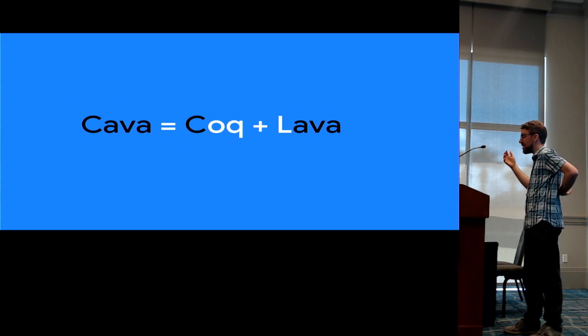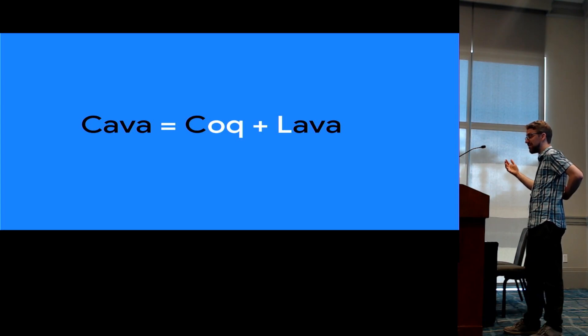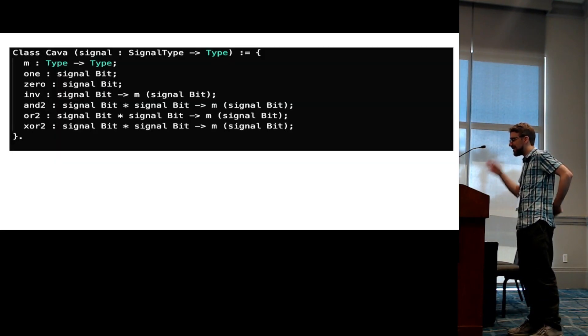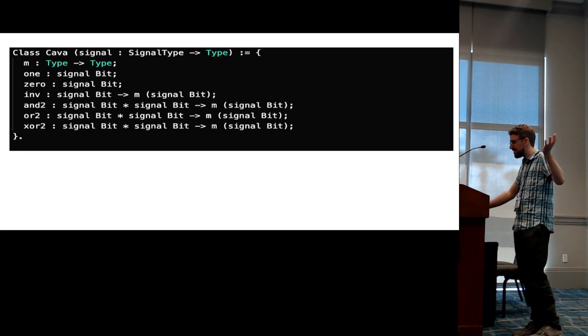And then more recently, Satnam wanted to redo LAVA, but in Coq, so that he can write proofs about it, and that's how he came up with the name CAVA. And here you can see a little type class, same as it was in Haskell or similar, but done in Coq.